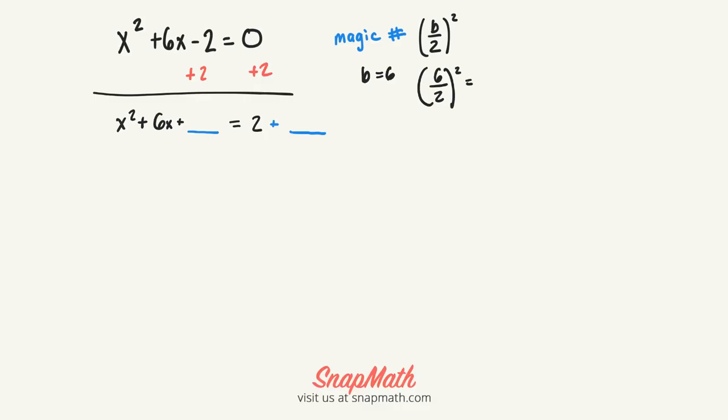And when we do that, we end up with 9. So I'm going to add 9 to both sides of the equal sign.